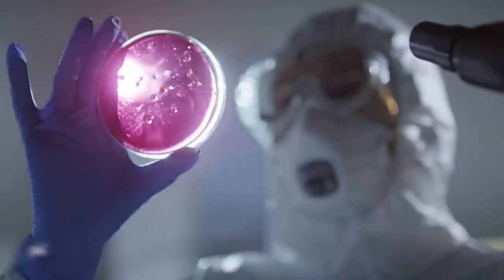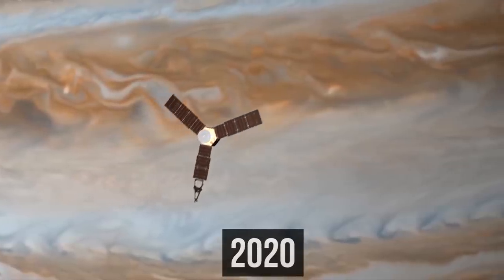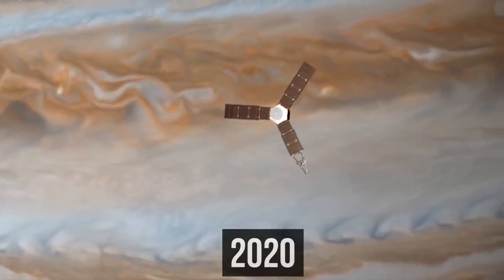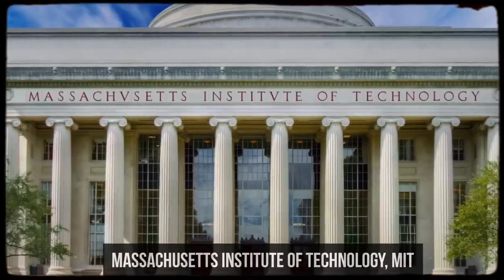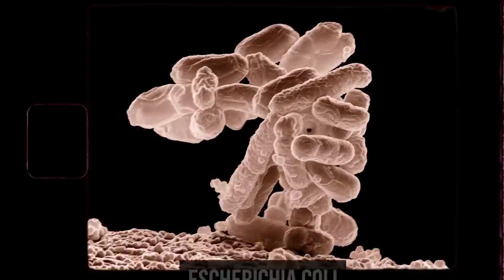NASA scientists just never assumed terrestrial bacteria could survive on Jupiter. But in 2020, 17 years after the disposal of Galileo, scientists at the Massachusetts Institute of Technology led by astrophysicist Sarah Seager unexpectedly figured out how microorganisms would behave on exoplanets.